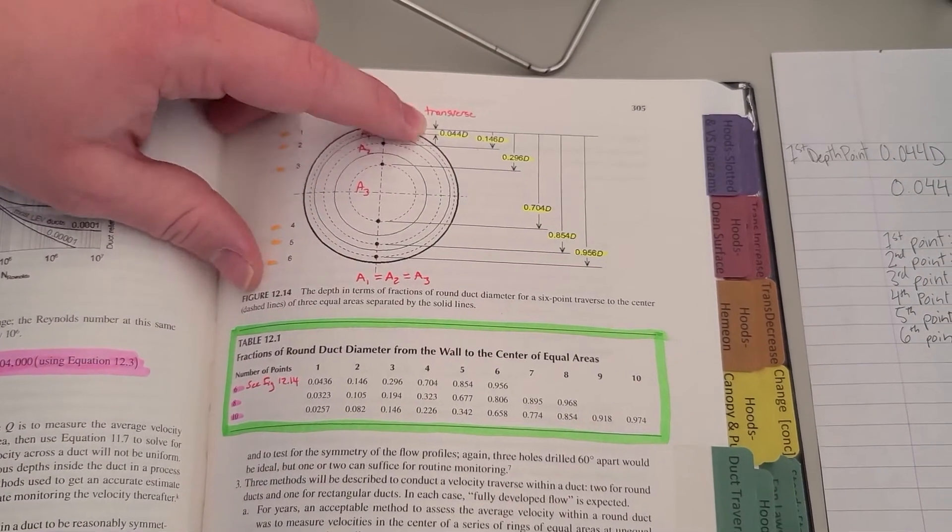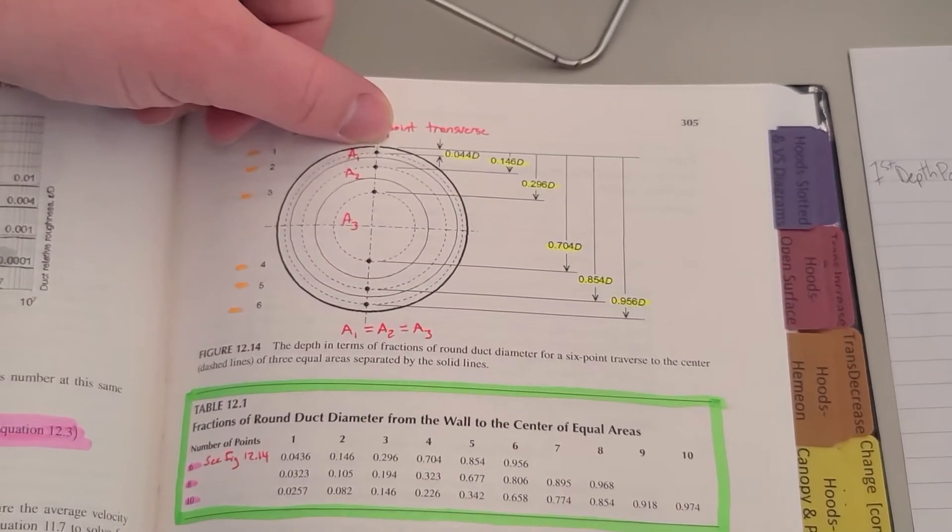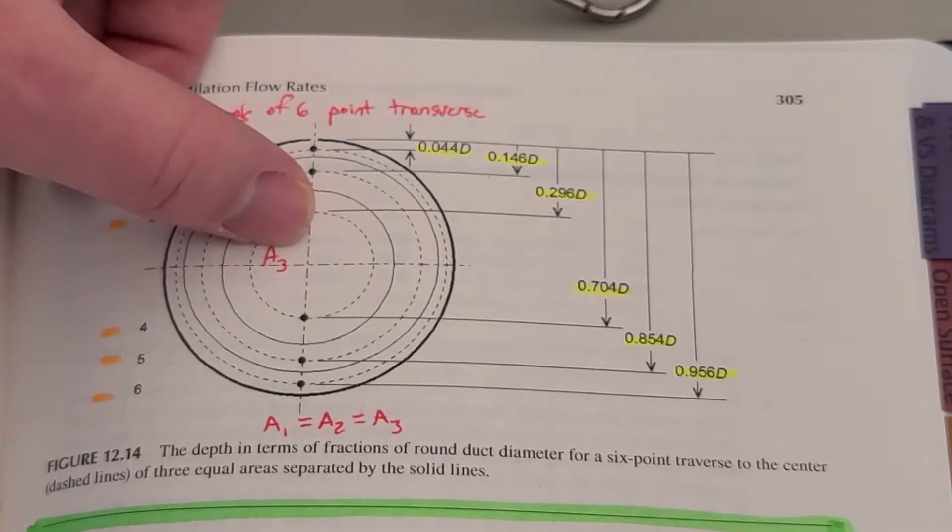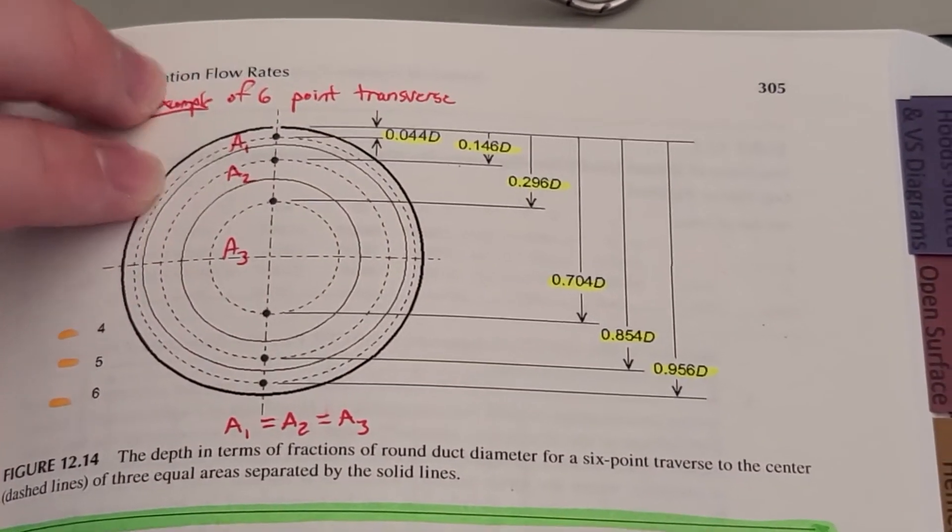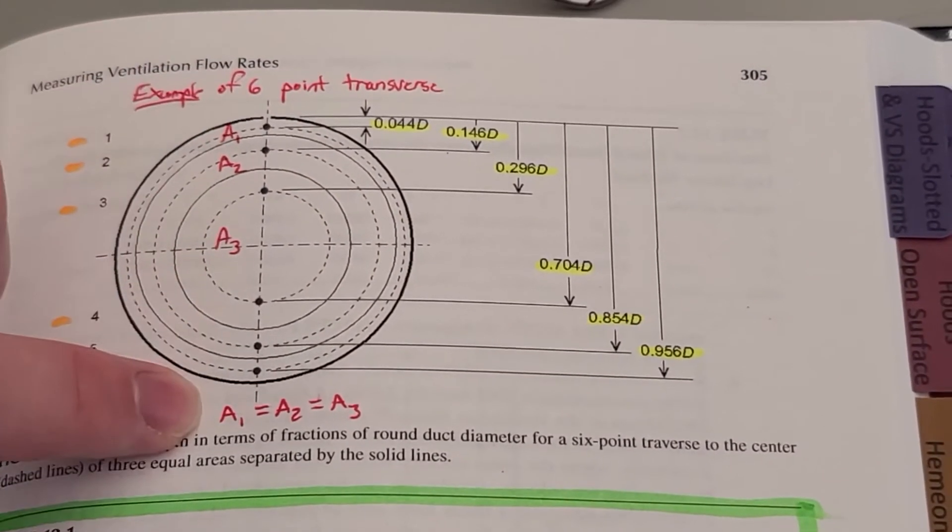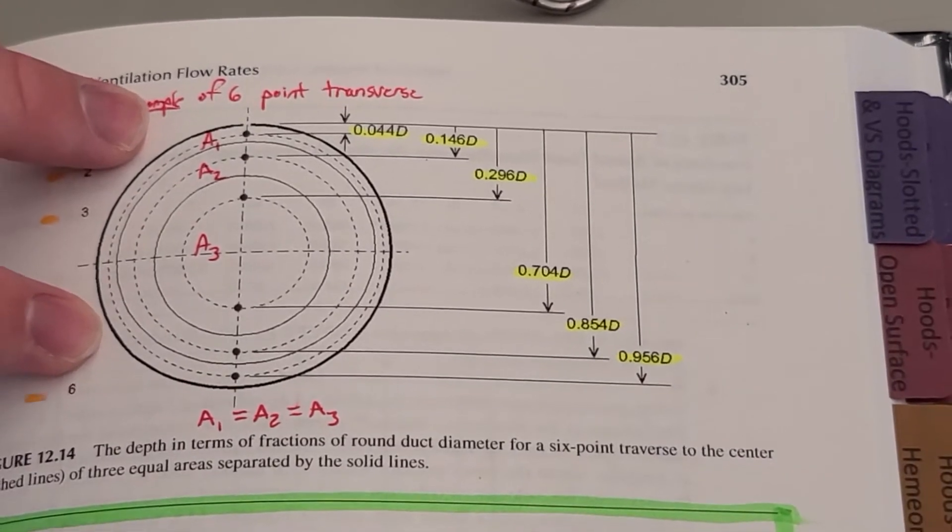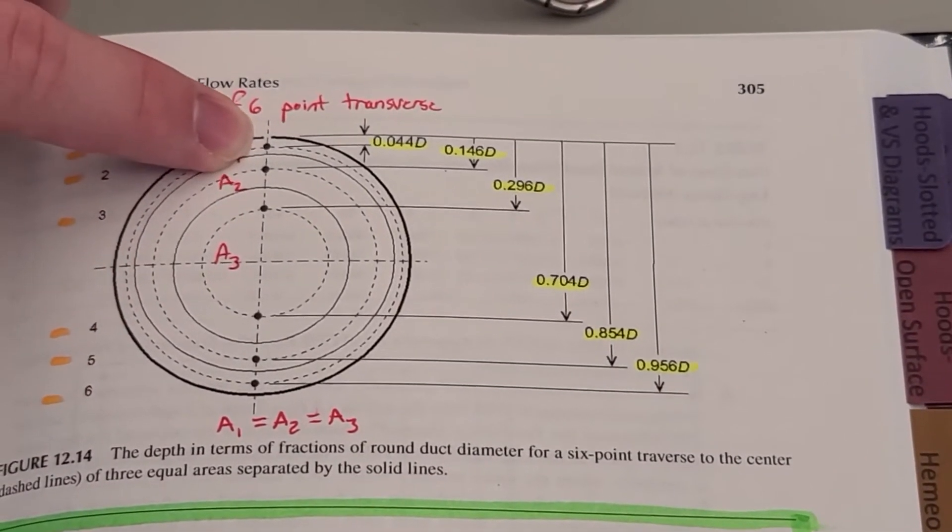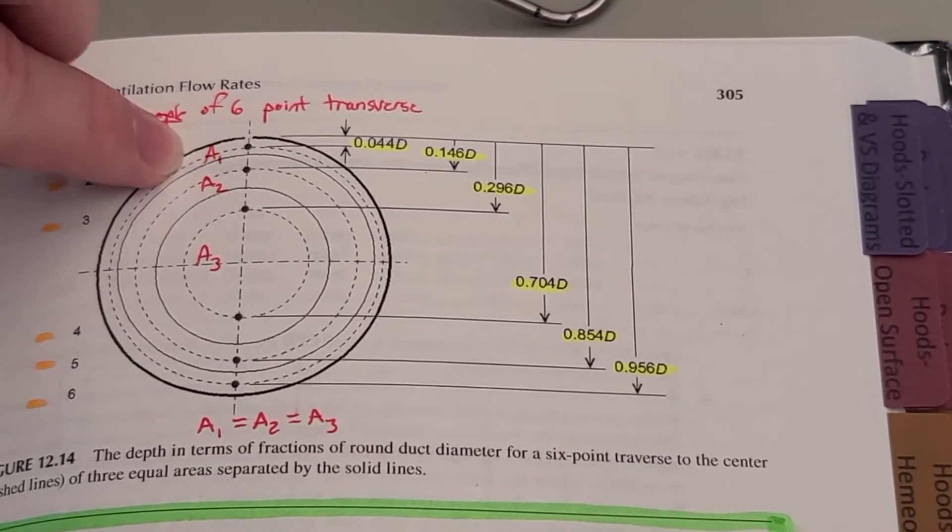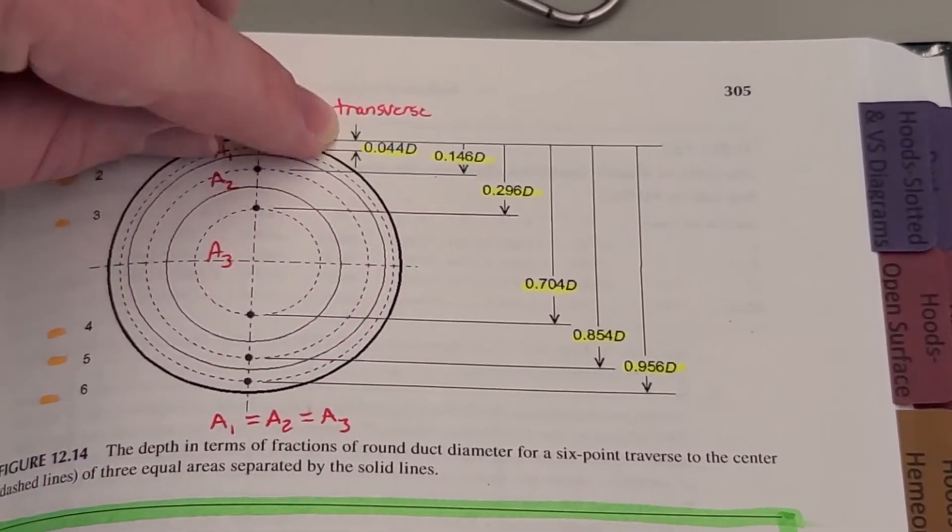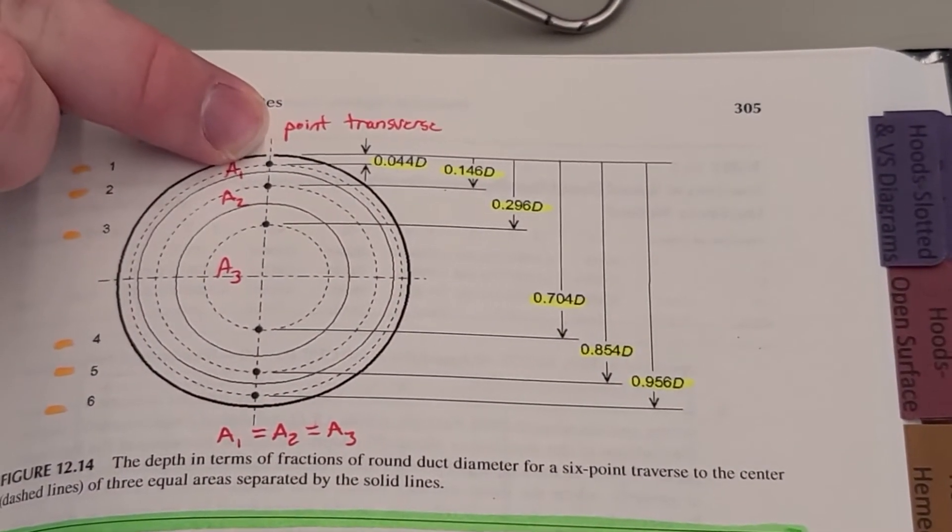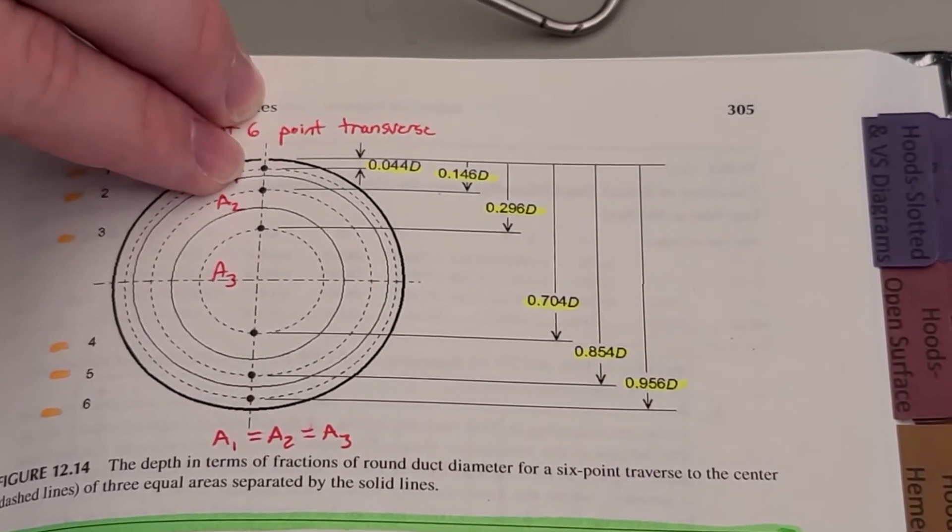The reason that these points vary—if you see, the depths are not equally distributed across the whole duct—is because the cross-sectional area of a circle is not even throughout. Here for the first point, since it is a small ring encompassing a large circumference, it covers a much larger cross-sectional area, so its depth needs to be much more shallow.